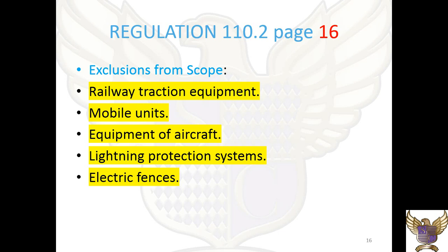On page 16, regulation 110.2 covers exclusions from scope — what the 18th wiring edition does not include: railway traction equipment, mobile units, equipment of aircraft, lightning protection systems, and electric fences.